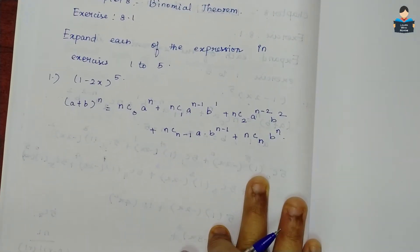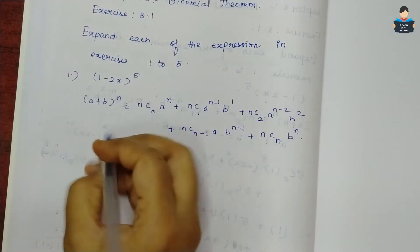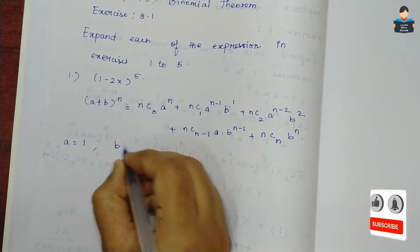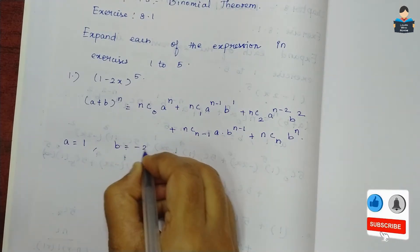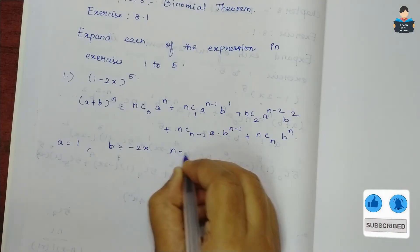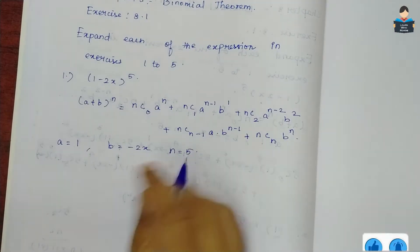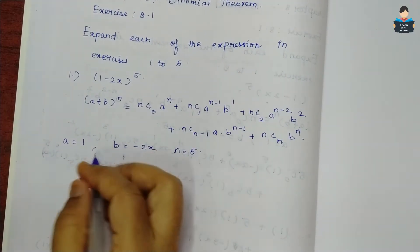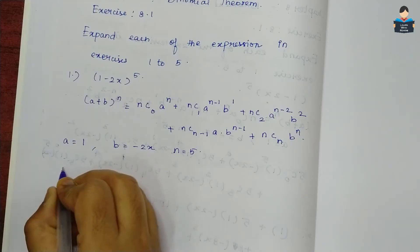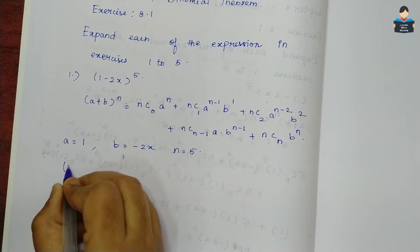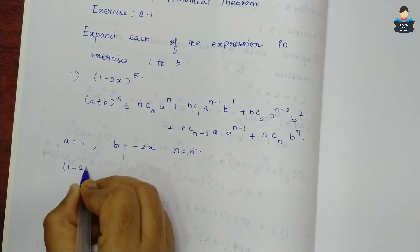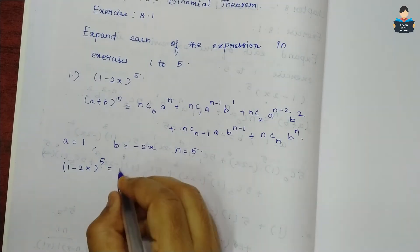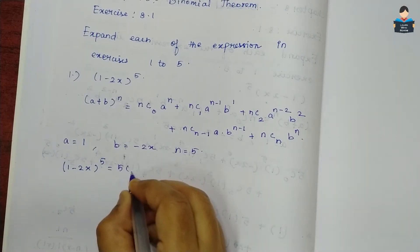So this is the formula. Now we have a=1, b=-2x, and n=5. We substitute these values into the formula to expand (1-2x)^5.